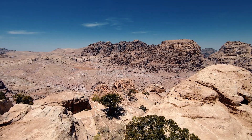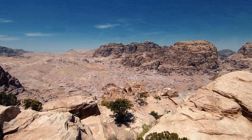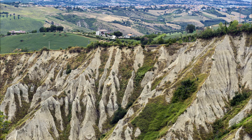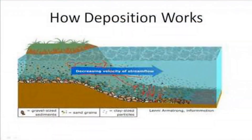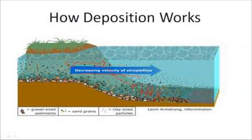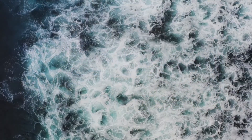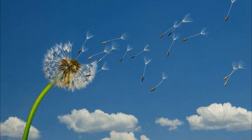The wearing away of the Earth's surface is called erosion. The surface is being lowered by the process of erosion and rebuilt by the process of deposition. These two processes are carried out by running water, ice and wind.